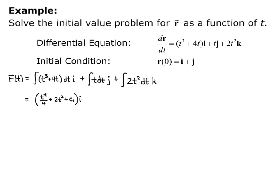The i component will be t to the 4th over 4 plus 2t squared plus a constant. I'm going to write that constant as c sub 1 because each component will have its own individual constant. So that's my i component: t to the 4th over 4 plus 2t squared plus c sub 1, times i.